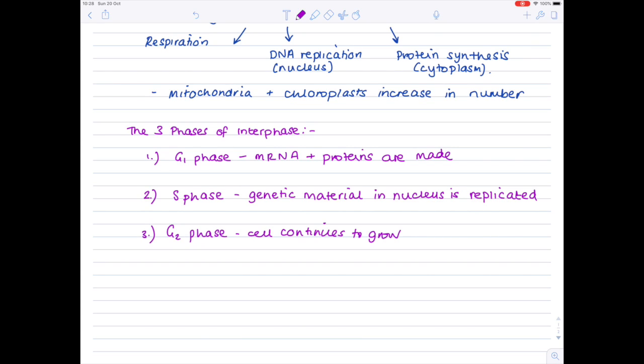Notice that in the G1 phase, mRNA and proteins are made. In the S phase, the genetic material in the nucleus is replicated. This is essential because during mitosis, two identical daughter cells are produced. We need to make sure that there's enough genetic material for both. And then in the G2 phase, the cell simply continues to grow.